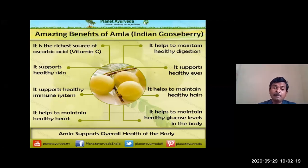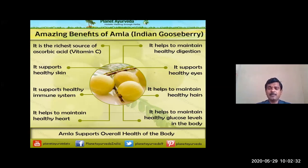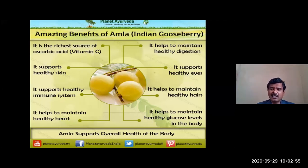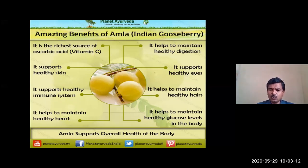As an amlarasatmaka dravya, Amalaki is useful in raktakshaya (anemia) - persons with raktakshaya have more interest in amlarasatmaka dravyas (amla shishirapriti). It helps maintain a healthy heart and healthy digestive system by increasing saliva and digestive secretions, helping in deepana pachana karma. Acharyas Sushruta and Vagbhata consider Haridra and Amalaki as best pramehaghnadravyas - the combination Nishamalaki churna is mentioned as best pramehagna.